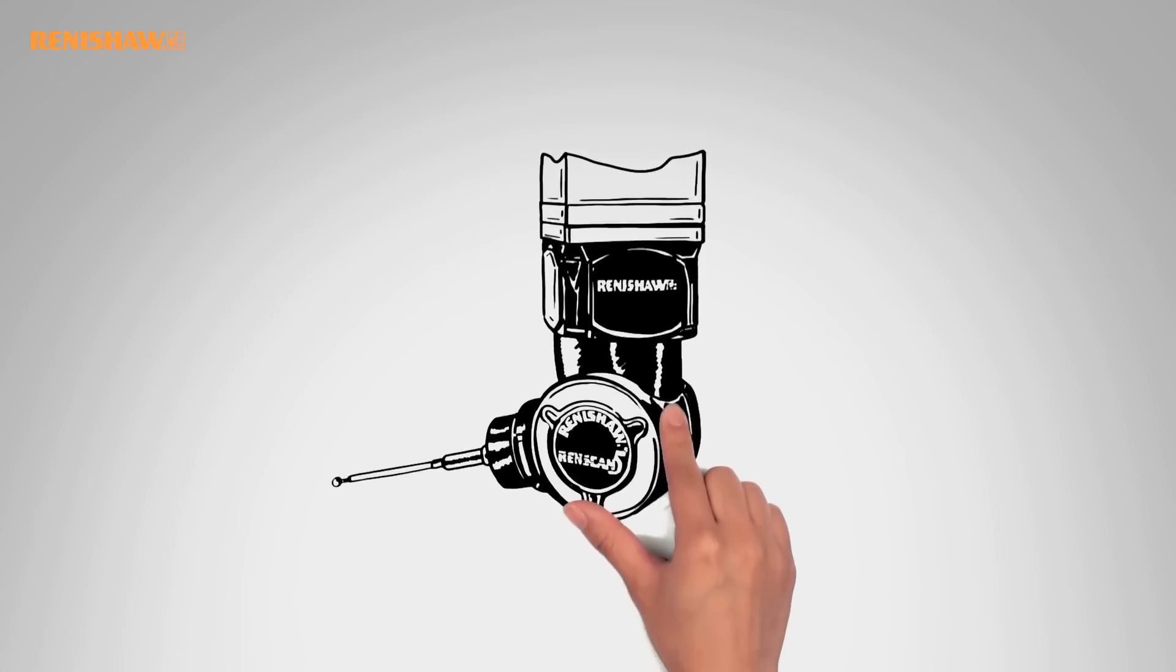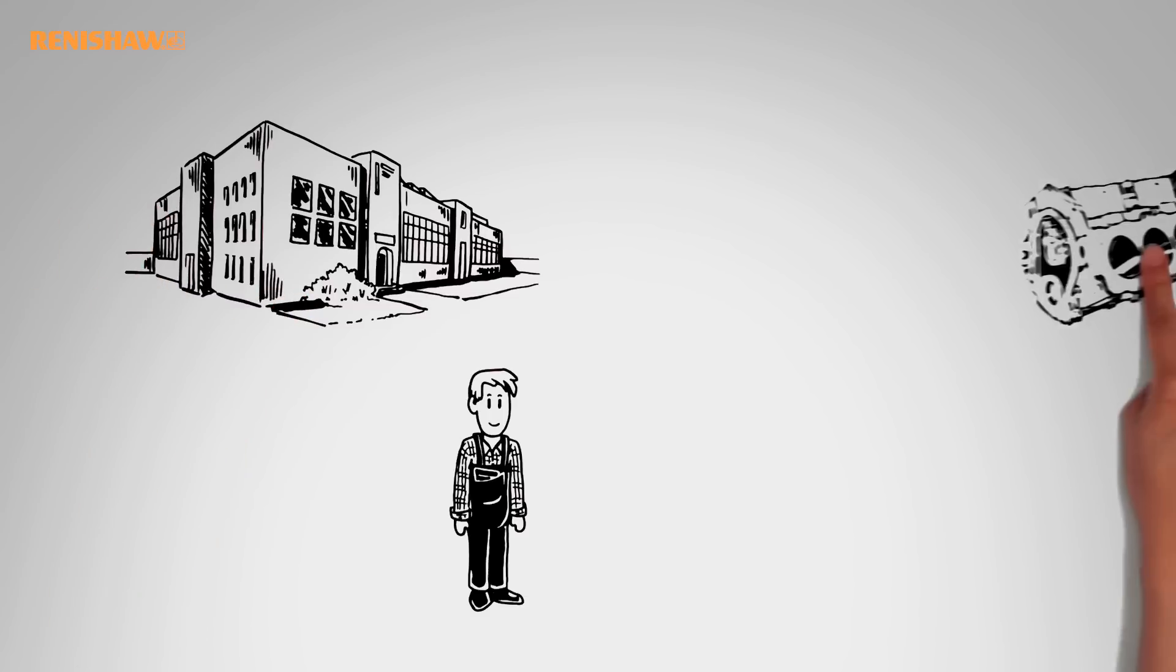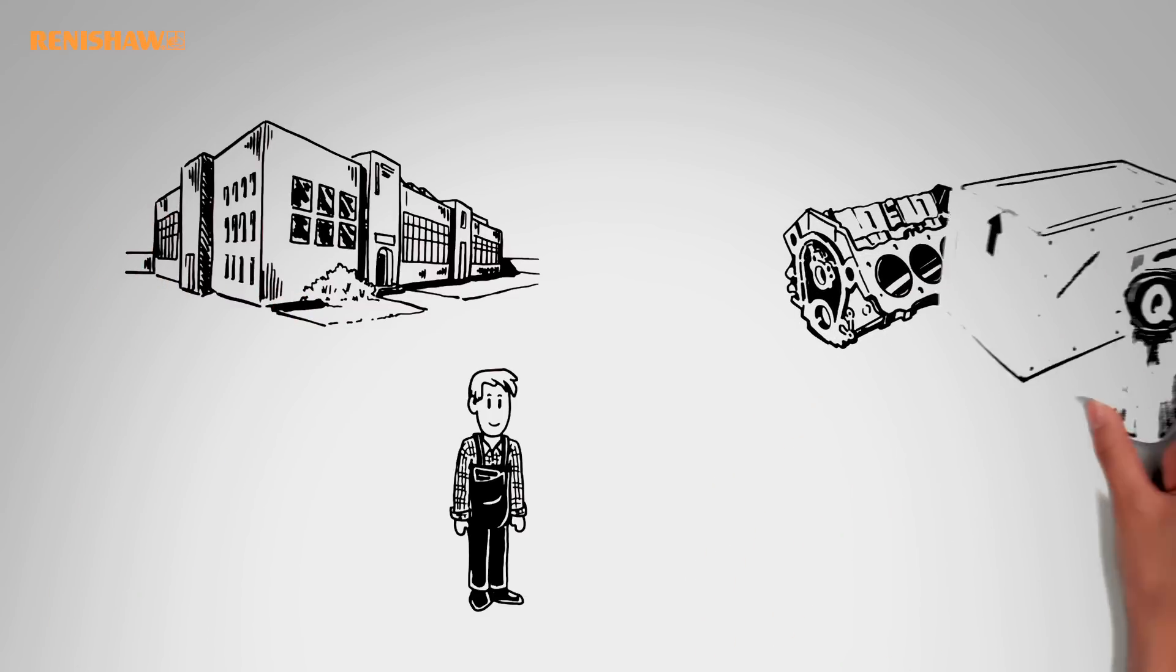Renishaw presents the Revo Measuring Head with 5-axis technology. This is Mr. Brown. He is responsible for quality assurance in a manufacturing company and for checking the accuracy of each part before it is dispatched.